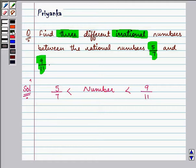First of all let us convert 5 by 7 into decimal form. And that comes out to be 0.71428571 and it goes on.